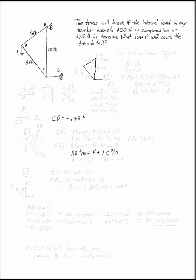The truss will break if the internal loads in any member exceed 400 pounds in compression or 375 pounds in tension. What load P will cause the truss to fail?